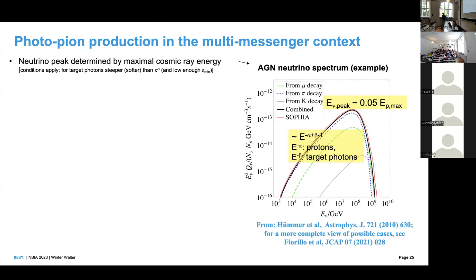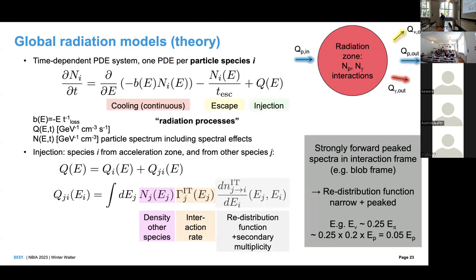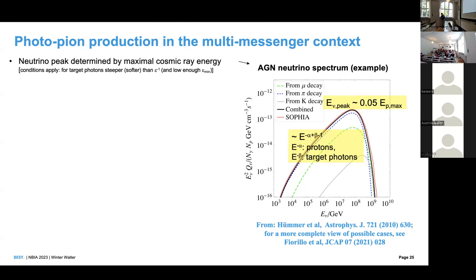Looking at typical neutrino spectra: a typical spectrum from p-gamma interaction does not look like E⁻². Instead you see peaky spectra. Since neutrinos take about 5% of the proton energy, if you have a cutoff in the proton energy spectrum, the cutoff in the neutrino spectrum will be at about 5% times that proton energy cutoff. This explains the high-energy cutoff seen in modeled spectra. What happens below the peak depends on the target photon properties for p-gamma interactions.